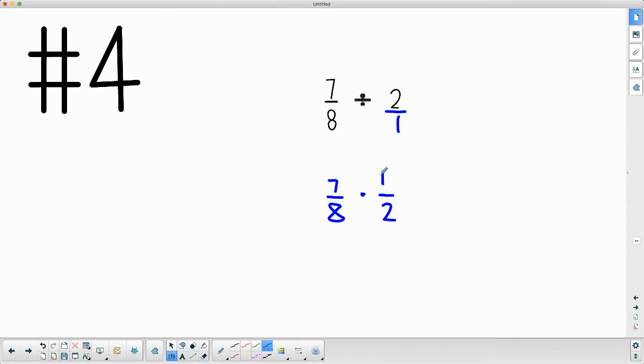I can see I can't simplify 1 and 8, I can't simplify 7 and 2. So we're going to multiply our numerators, multiply the denominators to get our answer there.